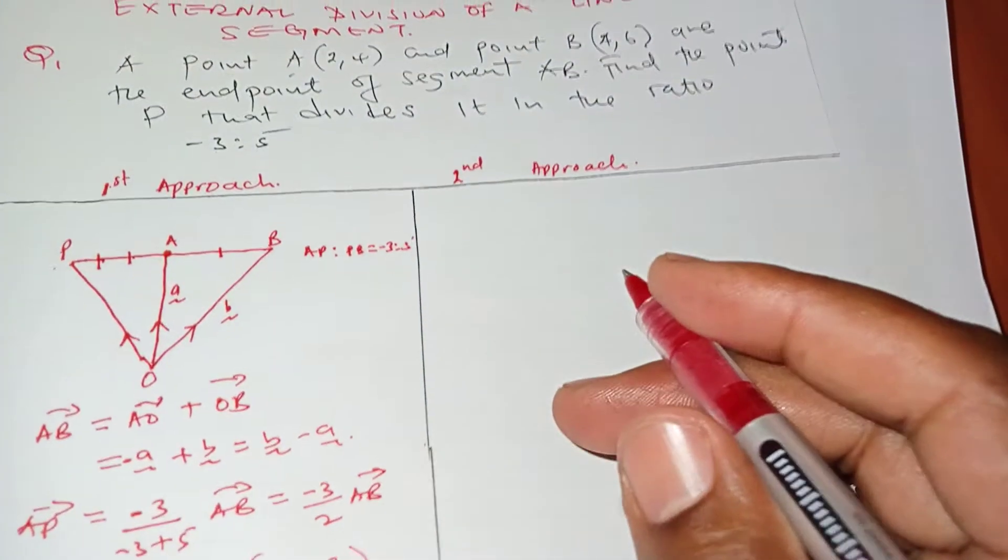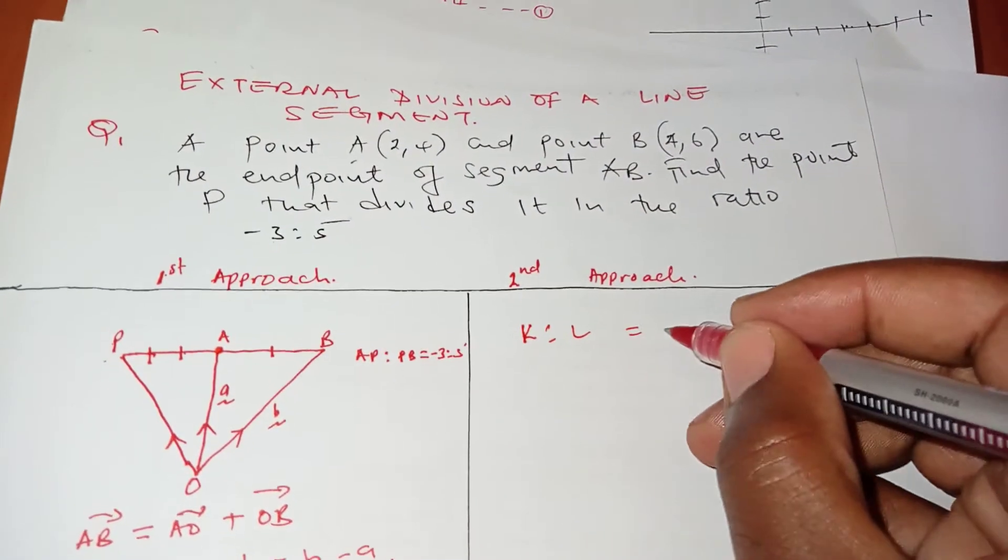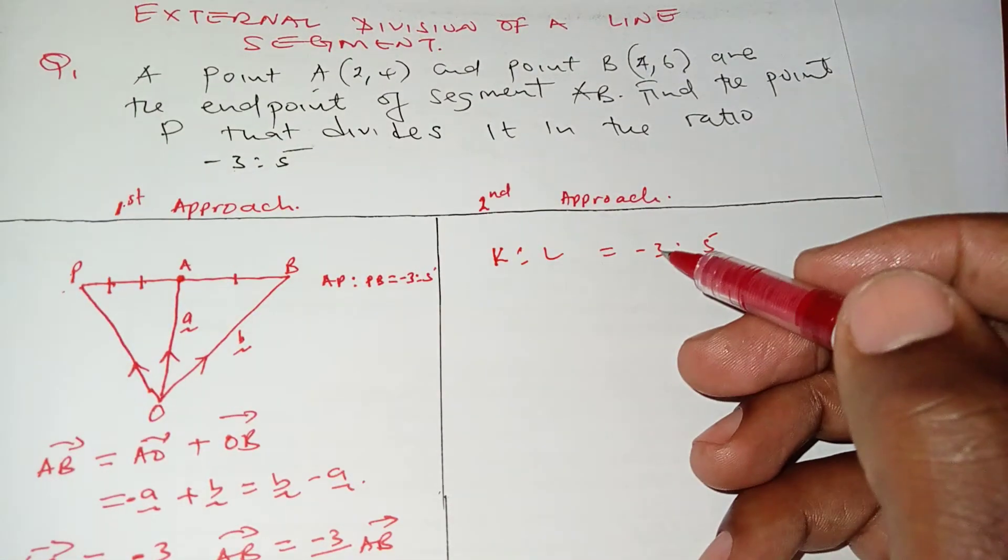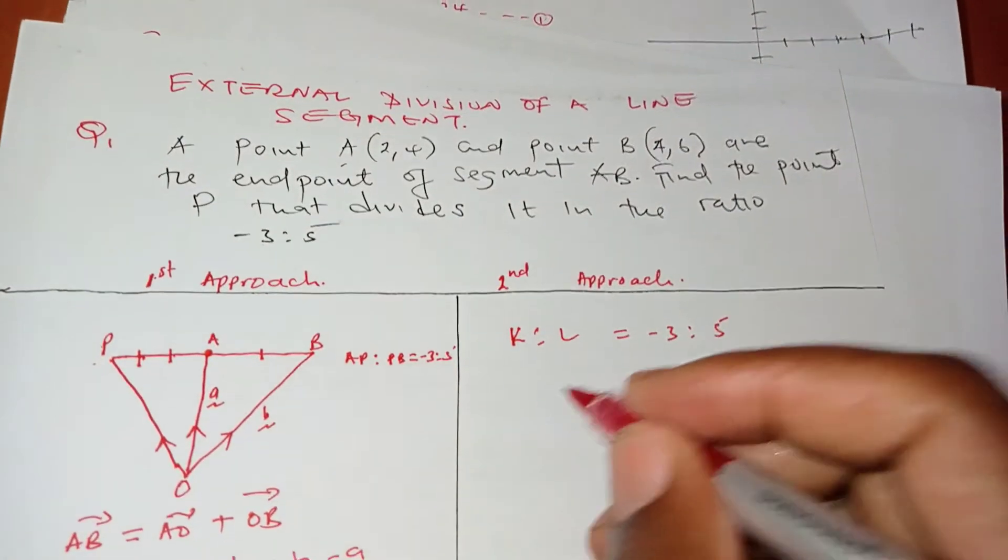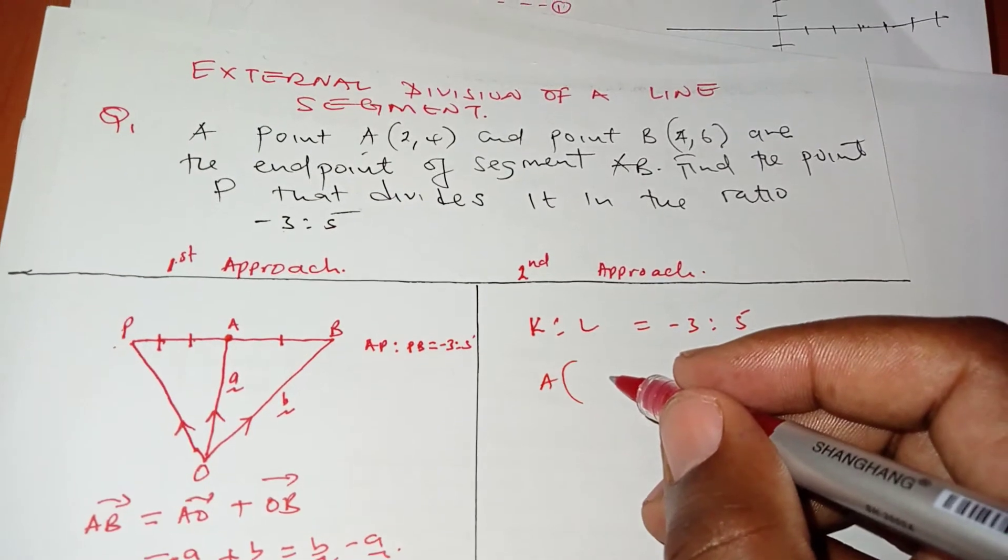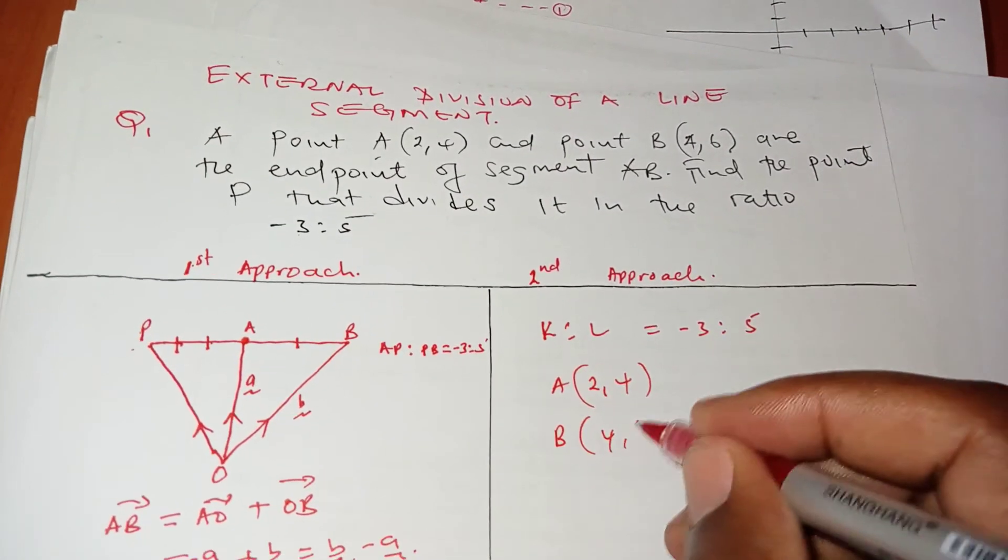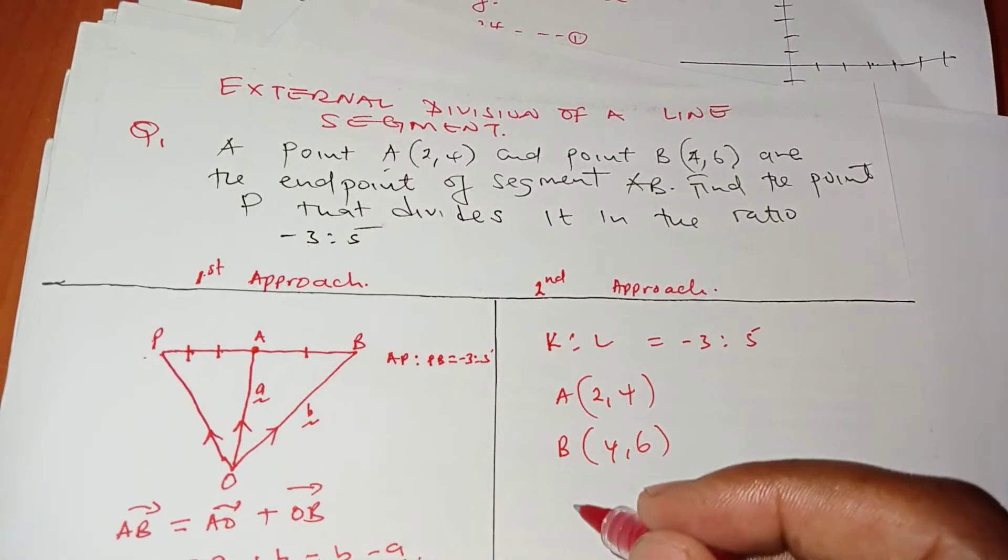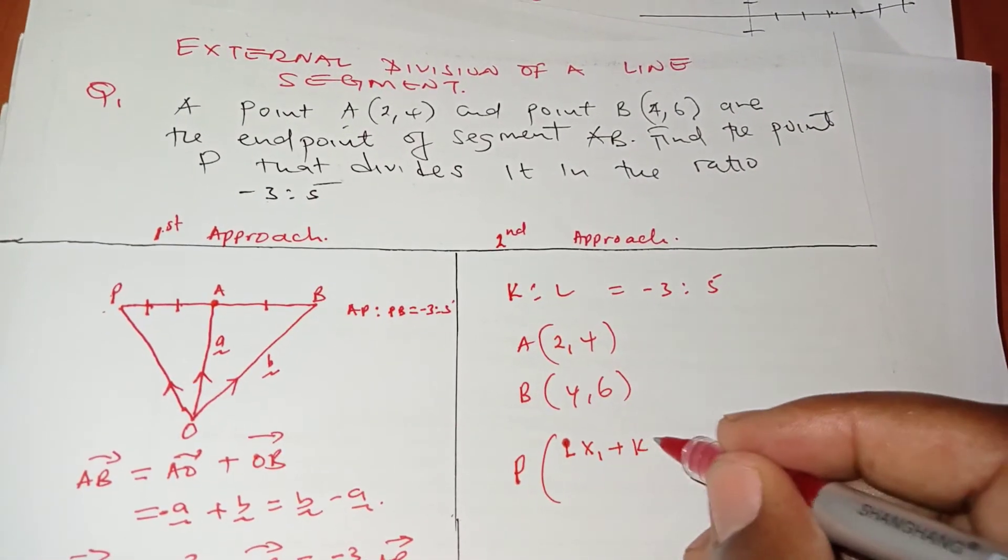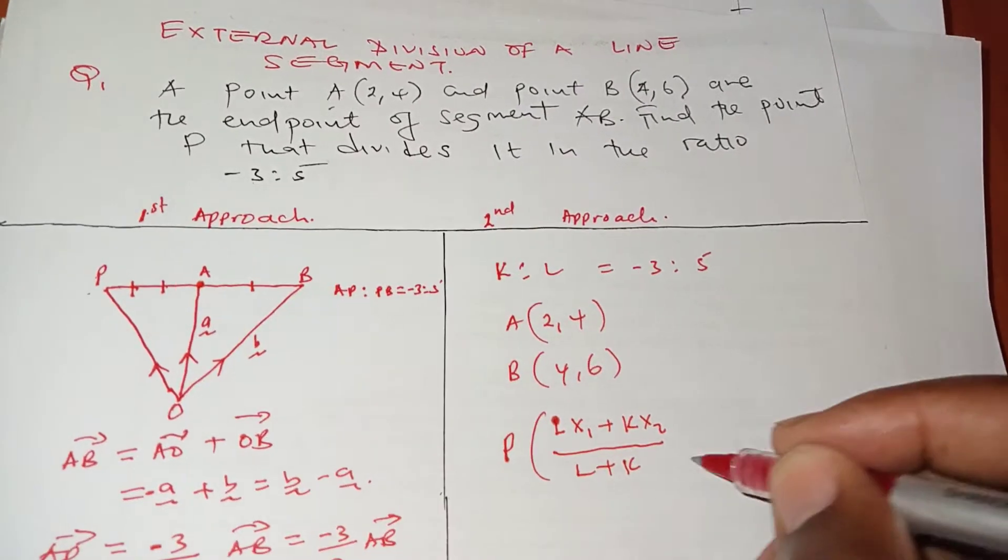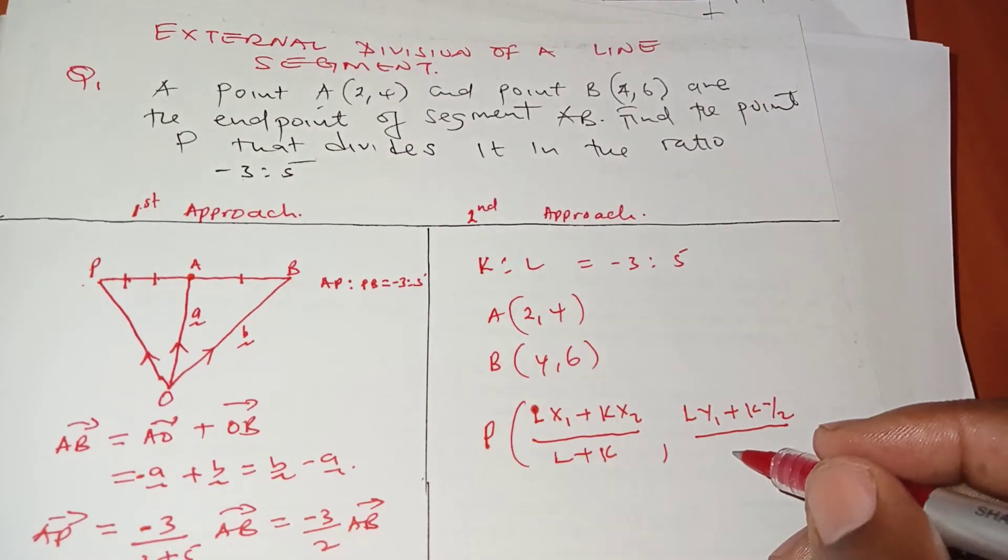The second approach is more or less like a formula. Assuming you have ratios K:L, in this case our ratios are -3:5, so K is -3 and L is 5, dividing line segment AB. To get point P, we take 2,4 for A and 4,6 for B. My coordinates of P will be (L·X₁ + K·X₂)/(K+L), (L·Y₁ + K·Y₂)/(K+L). It's like the midpoint formula with coefficients involved.